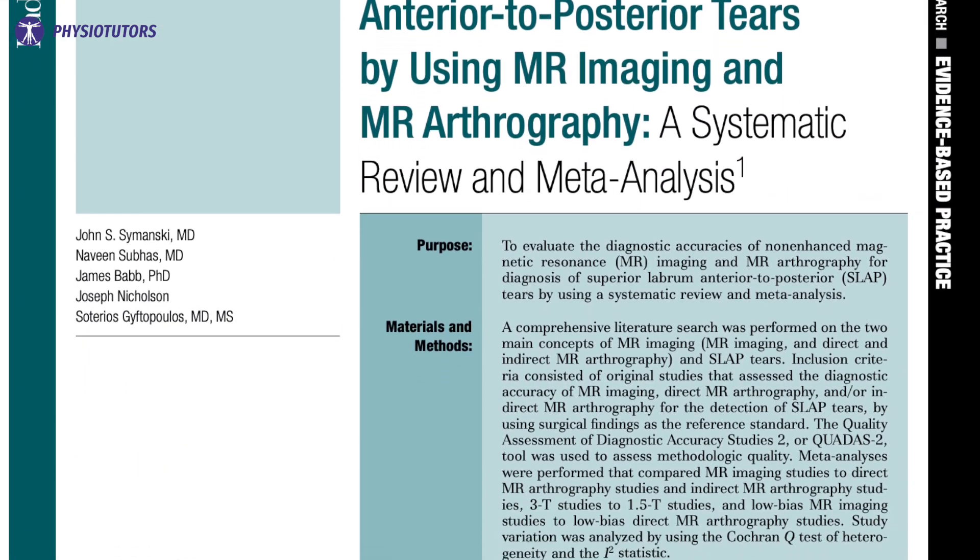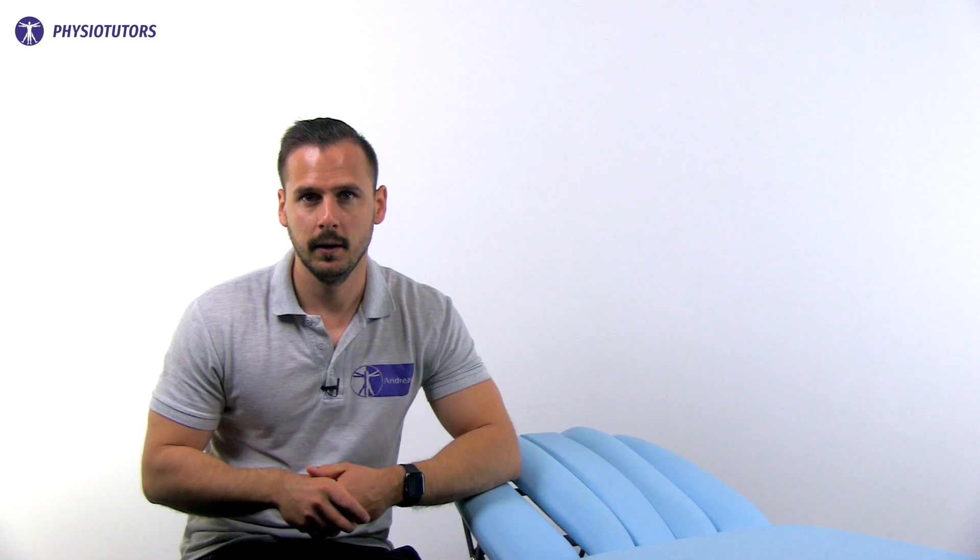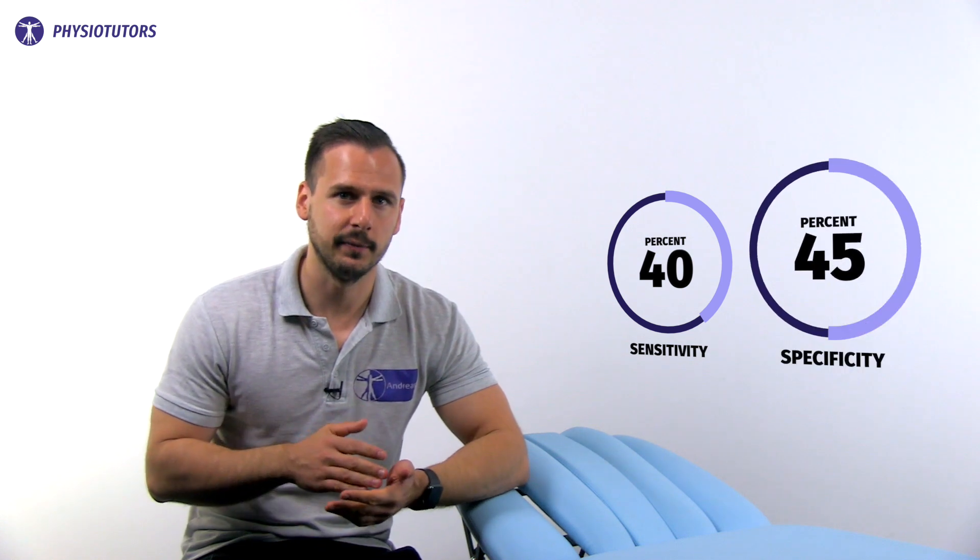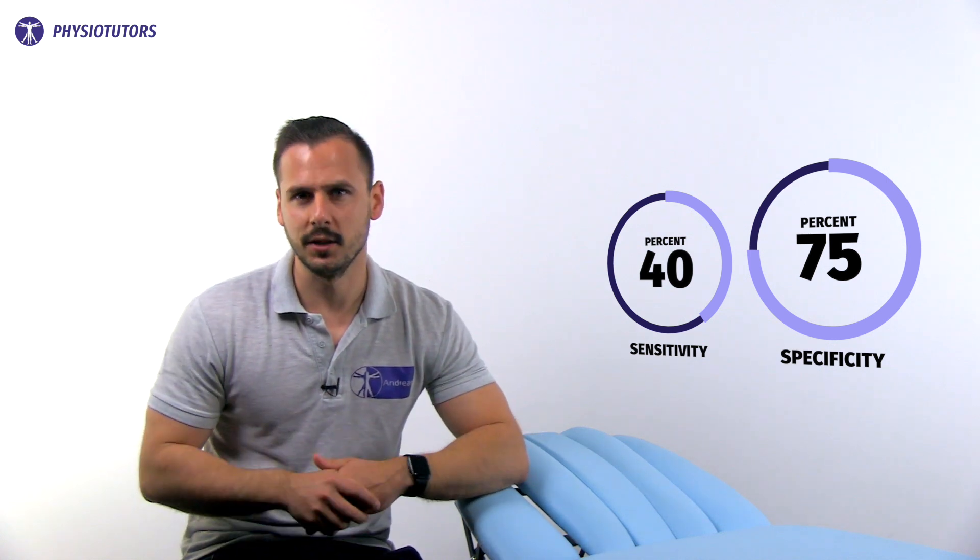A systematic review with meta-analysis from Simansky et al. suggests that for a diagnosis of SLAP tears, direct MR arthrography is the preferred method. In 2012, Cook et al. investigated the diagnostic accuracy of five orthopedic clinical tests for the diagnosis of SLAP lesions, among which they included the labral tension test. In patients where an isolated SLAP lesion was suspected, the test yielded a sensitivity of 40% and specificity of 75%, and thus lacks the capacity to independently rule in or rule out the condition. As most patients with SLAP lesions have other disorders as well, the clinical value of this test remains weak.